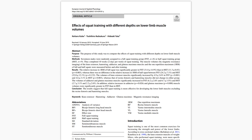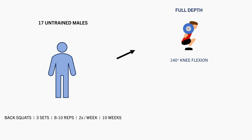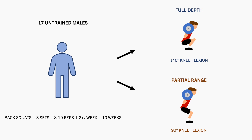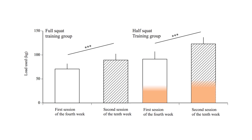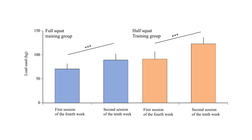This was seen in this study, which compared the effects of full versus partial range of motion squat training on strength and hypertrophy. 17 untrained males performed squat training with three sets of 8 to 10 reps with progressively increasing loads two times per week for 10 weeks. Half the subjects performed squats to full depth, defined as 140 degrees knee flexion, while the other half performed partial range of motion squats, defined as 90 degrees knee flexion. As we can see, the partial squats used heavier loads on average throughout the course of the training program, shown in the orange, compared with the full range of motion training, shown in the blue.